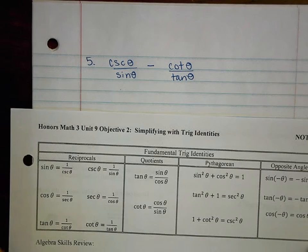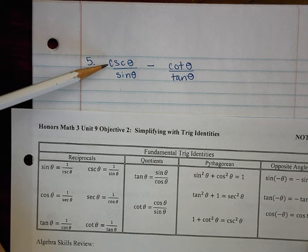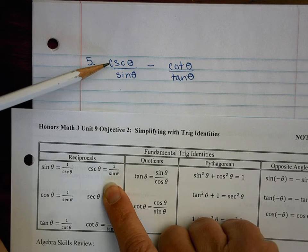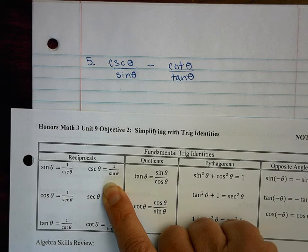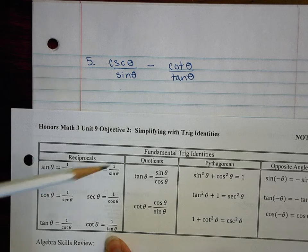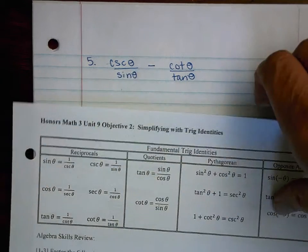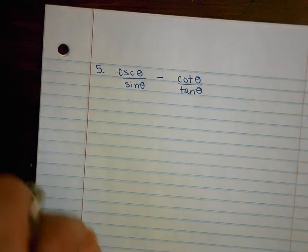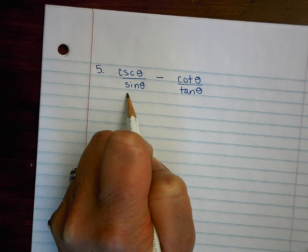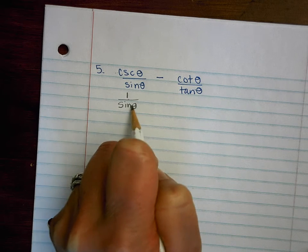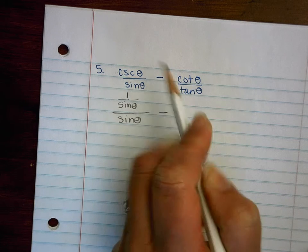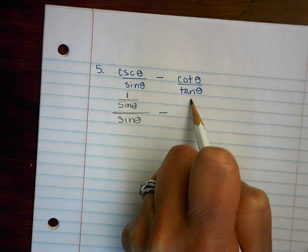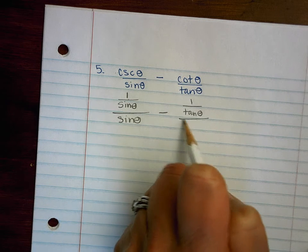I'm going to start by using some of my reciprocal functions. I know that cosecant theta is the same as 1 over sine, so I'm going to replace that with 1 over sine. And I'm also going to work with the cotangent reciprocal function — cotangent is the same as 1 over tangent. So I'm going to replace cosecant theta with 1 over sine theta, still over sine, and replace cotangent with 1 over tangent theta, still over tangent.